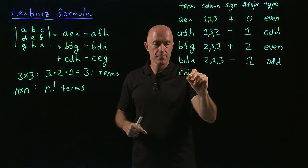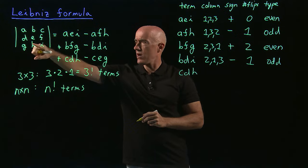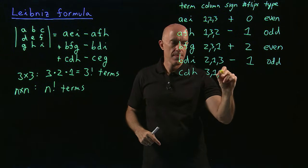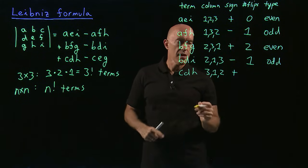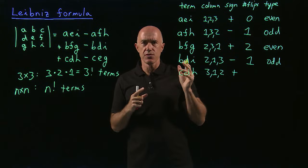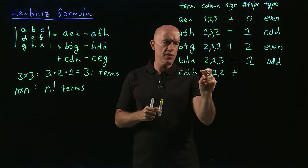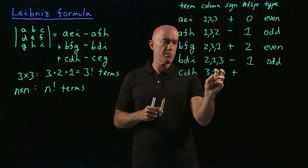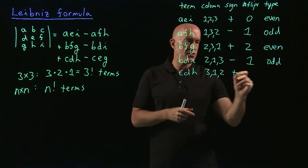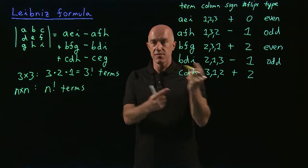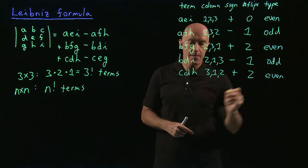Next, C, D, H. The column order is 3, 1, 2. That gets a plus sign. How do we get from 3, 1, 2 to 1, 2, 3? We put one in the first slot to get 1, 3, 2, and then swap three and two to get 1, 2, 3. So we need two flips — two permutations. Two is an even number.